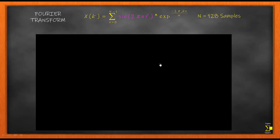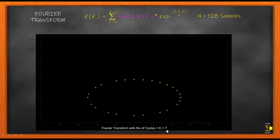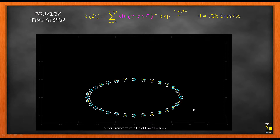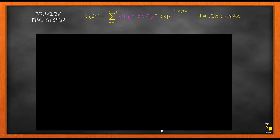We will end with this final demonstration. For the number of cycles equal to k equal to 7, the number of cycles and k are matched. I am representing the points with different diameters, and what you see is the points coinciding with each other — getting plotted one above the other — giving almost seven circles. That is how the Fourier transform gets plotted whenever the number of cycles equals the value of k.